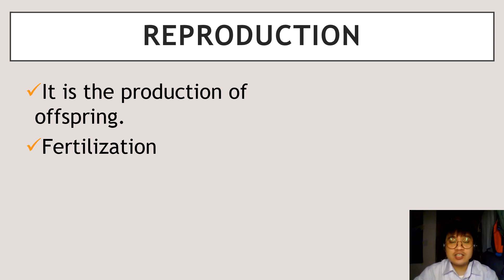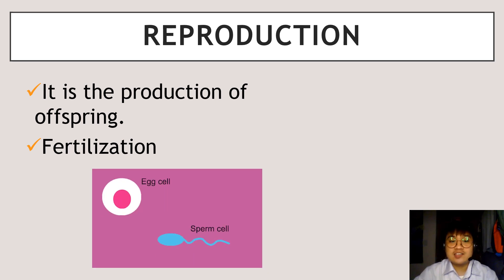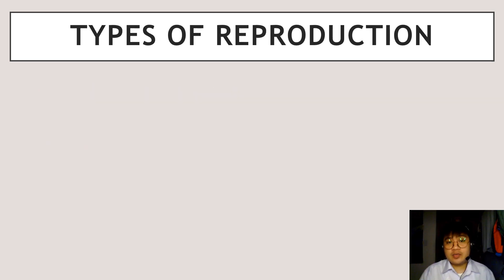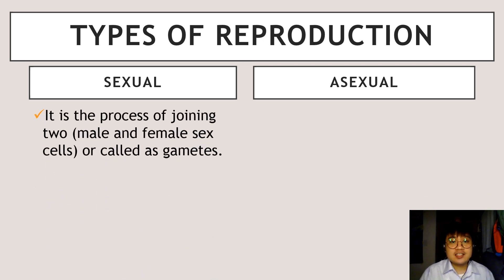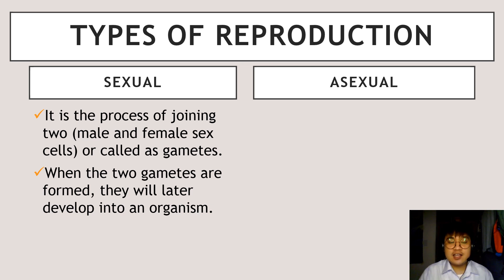Fertilization is the process of unification of two sex cells — the sperm cell from the male and the egg cell from the female. As you observe in this illustration, it showcases the fertilization process. In sexual reproduction, it is the process of joining of two sex cells coming from the male and female, also called gametes. There is a need for unification of two sex cells from different sexes. If fertilization is successful, the fertilized egg will develop into an organism within the uterus and eventually become a complete organism.